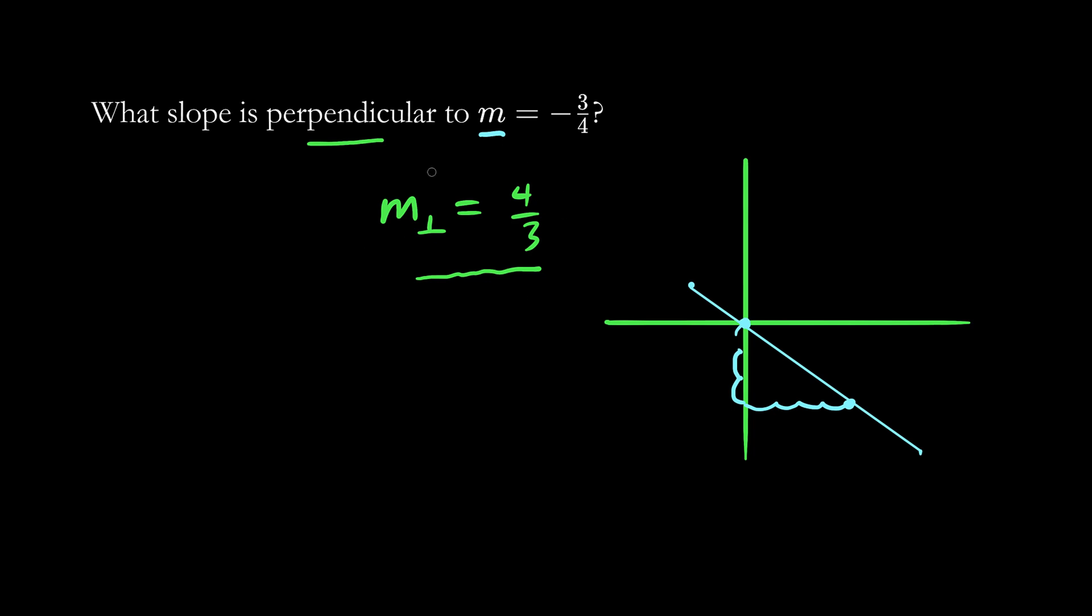Now the perpendicular slope would be 4 over 3. So we're going to start at the origin. And the rise is 4 and the run is 3. The rise of 4 would go up 4—1, 2, 3, 4—and the run would be 3: 1, 2, 3. We draw a line through these.